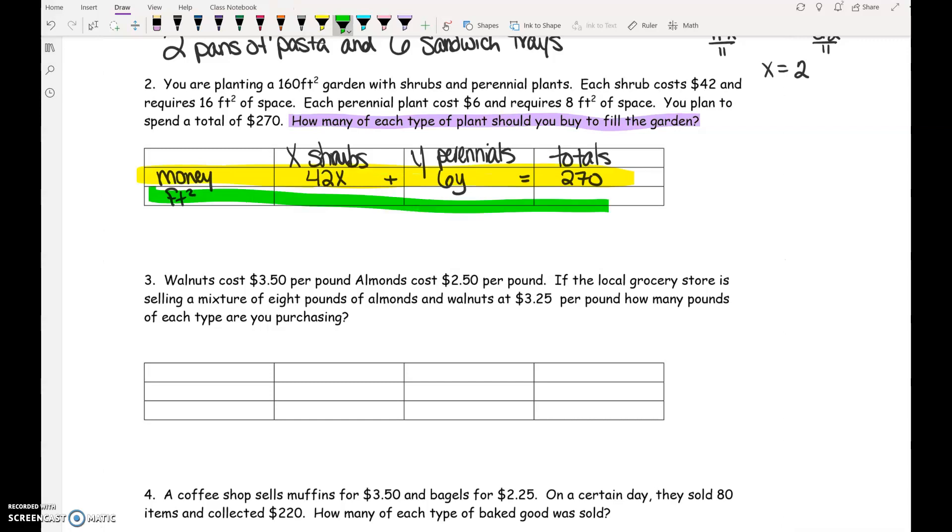Next, the space parts of the problem. The square feet parts. The shrub is 16 square feet of space per shrub and 8 square feet of space per perennial equals a total of 160 square feet in our garden. Once you have the equations written, now you have to think about how you would solve them. I would definitely advise against substitution on this because you'd have to, like, divide both sides by 6 or divide both sides by 8, and that doesn't sound like a lot of fun.